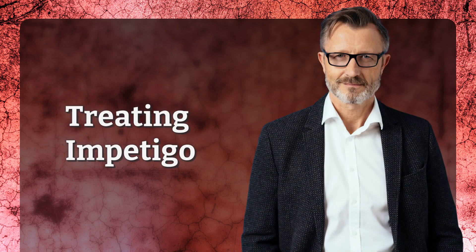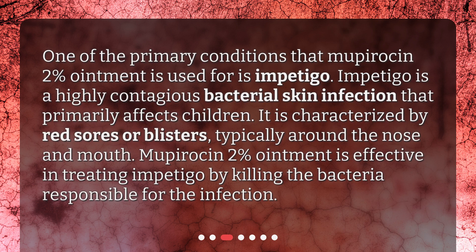Treating Impetigo. One of the primary conditions that Mupirocin 2% ointment is used for is Impetigo. Impetigo is a highly contagious bacterial skin infection that primarily affects children. It is characterized by red sores or blisters, typically around the nose and mouth. Mupirocin 2% ointment is effective in treating Impetigo by killing the bacteria responsible for the infection.